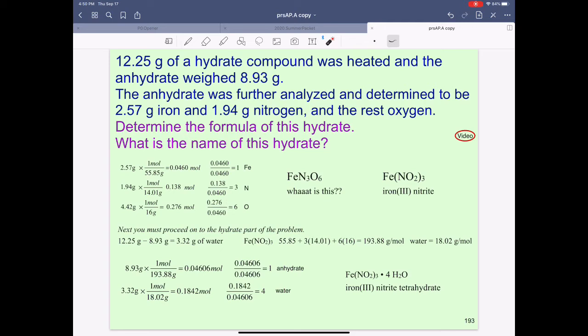Now onto the rest of the problem. We need to find out how much water. So we take the original mass of the hydrate and subtract the anhydrate value, and that will tell us how much water. We'll need the molar mass of this anhydrate, 193.88, and of course you need the molar mass of water.